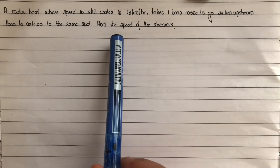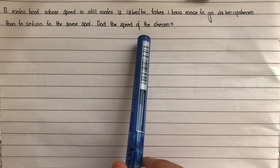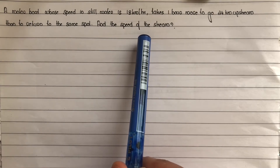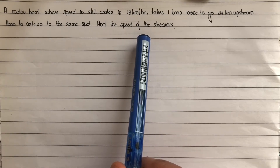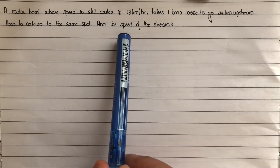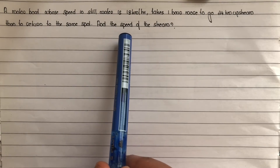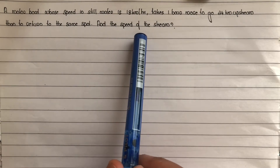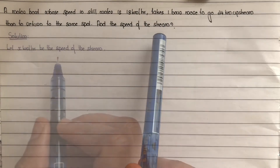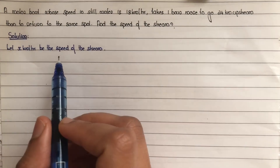First step: find out the variable. Let x km per hour be the speed of the stream.